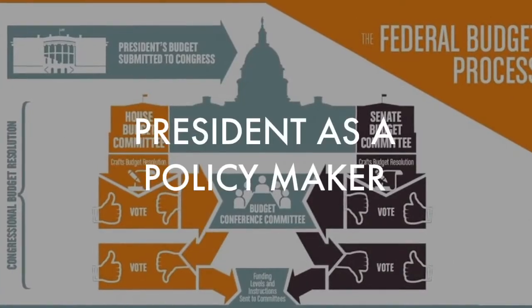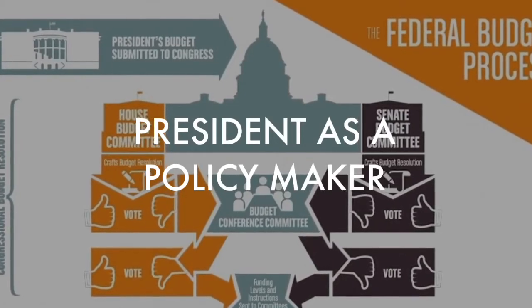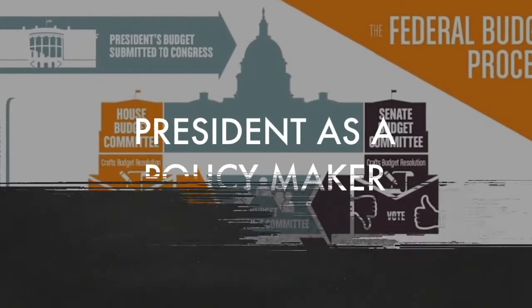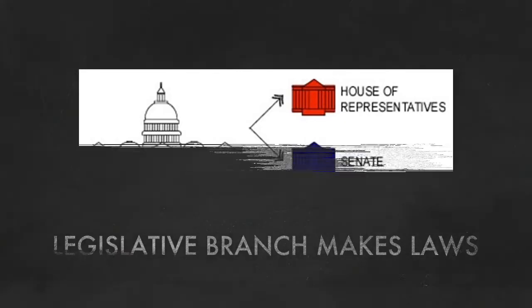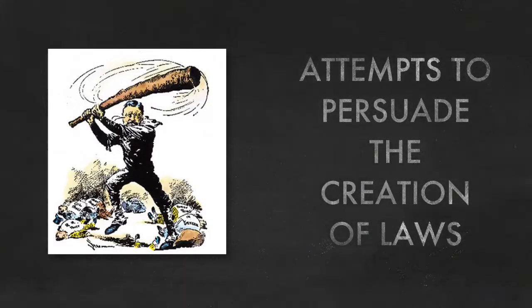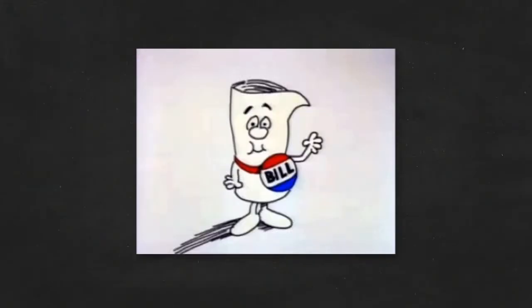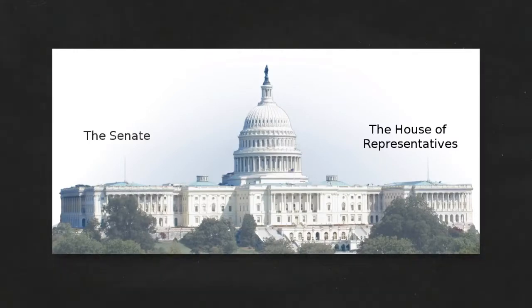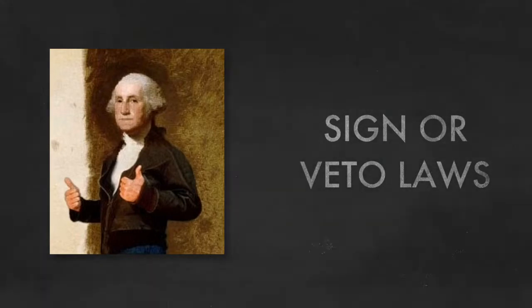The president is a policymaker. Now all government institutions actually make policy. The legislative branch makes the laws, and the president is going to try to influence Congress to create laws that they want. They use the bully pulpit, or the visibility and prestige of the office, to mobilize the people. And when a bill gets passed by both houses of Congress, it's up to the president to sign or veto those laws.